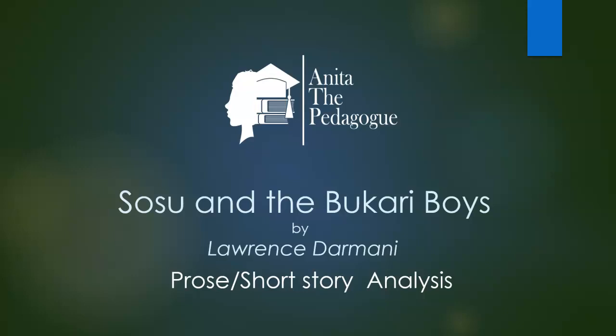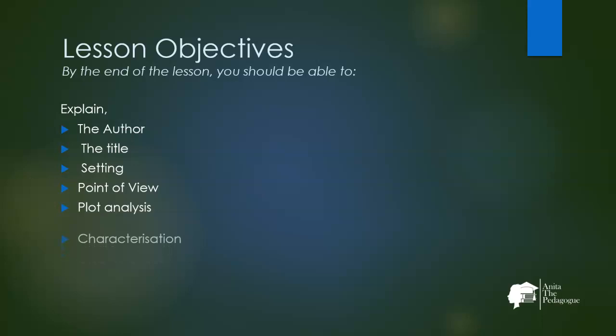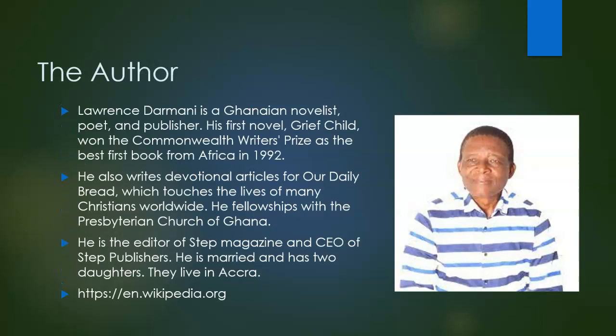Hello, welcome to Anita the Pedagogue channel. Today we want to look at a short story analysis. The title of this story is 'Sosu and the Bukhari Boys,' written by Lorence Damani. Today we will look at the author, the title, the setting, point of view, plot analysis, characterization, literary devices, themes, and some likely examination questions.